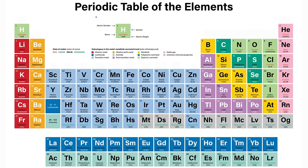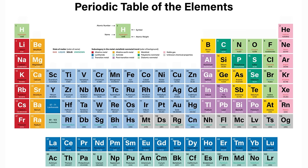In this video, we're going to talk about the periodic table of the elements. There are two important things you need to know: the columns are called groups, and the rows are called periods.